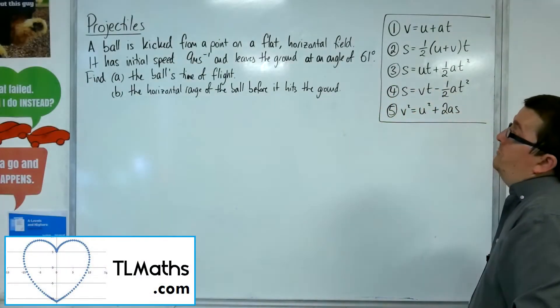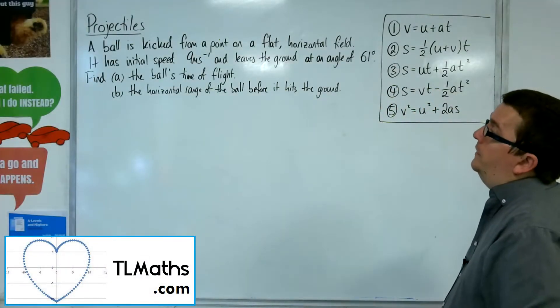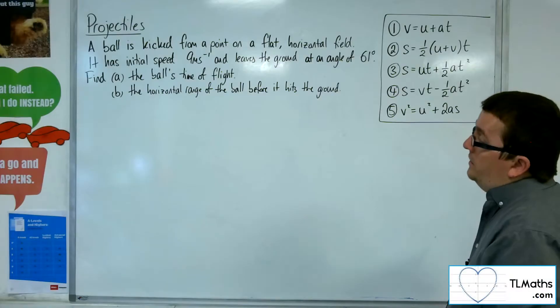In this video, a ball is kicked from a point on a flat horizontal field. It has initial speed 9 metres per second and leaves the ground at an angle of 61 degrees.